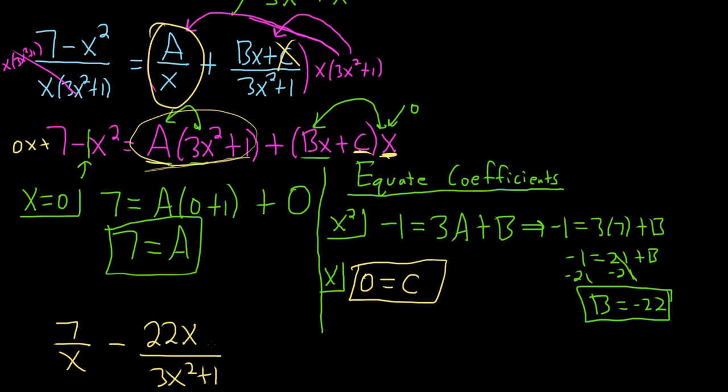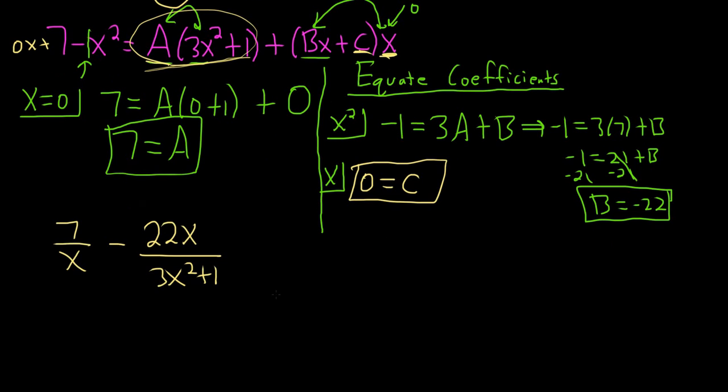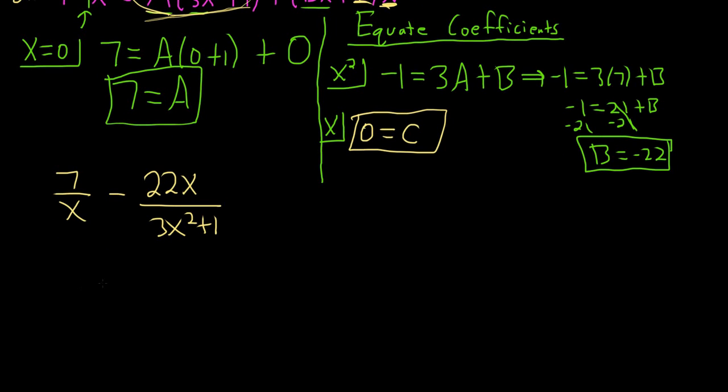So now we just have to integrate both of these. So for the first one we can pull out the 7. Then we'll have 1 over x dx. For this one let's go ahead and pull out the 22. And we'll have x over 3x squared plus 1 dx.